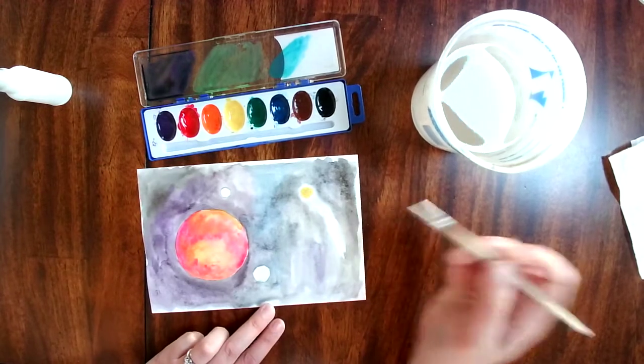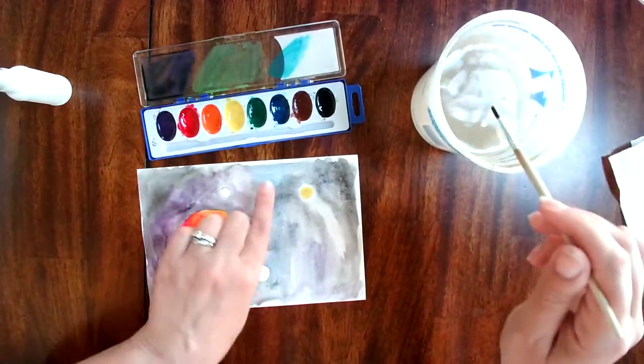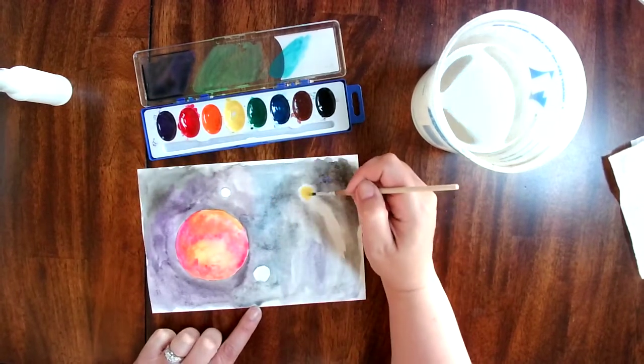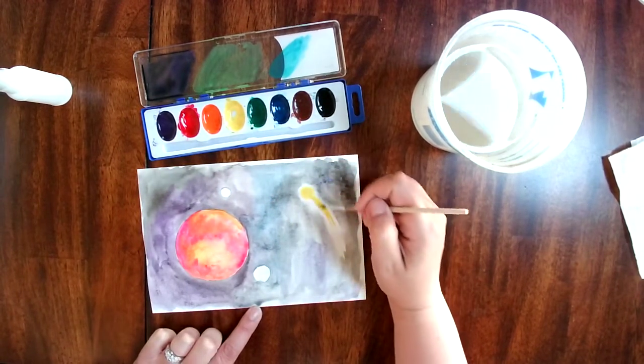Just put a little dot right there and let that - it's very wet right in there, so I'm just using straight paint and let that flow.